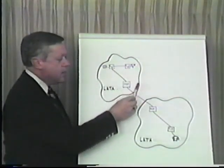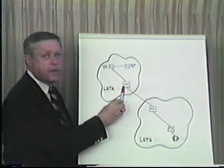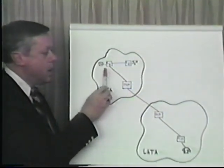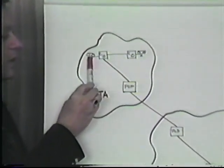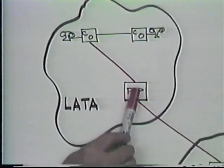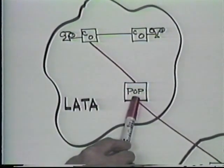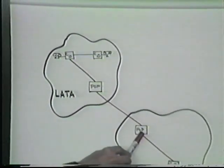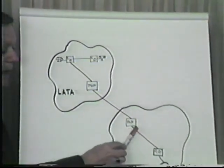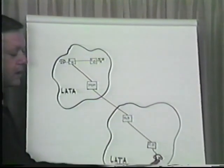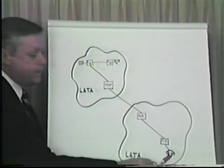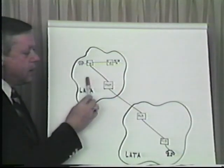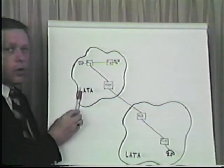Within the LATA, the long distance carriers have a central office they call a POP, or point of presence. When you dial a long distance number, your phone company connects you to their point of presence. The call is routed across the country to the point of presence for that carrier in the other LATA, then passed into the local phone company, and the phone rings for the person you're calling. Within the LATA, all the services belong to the local phone company.